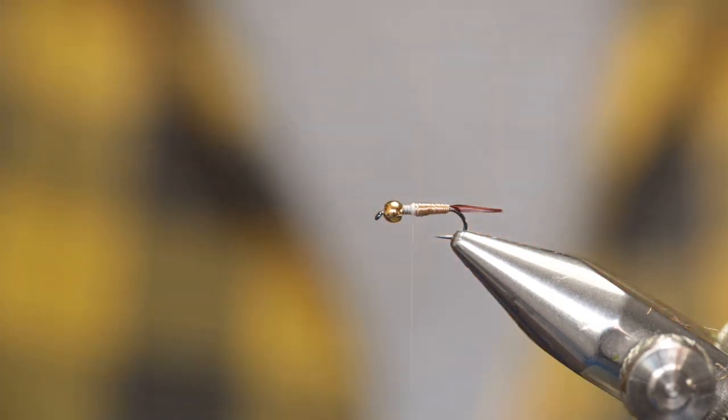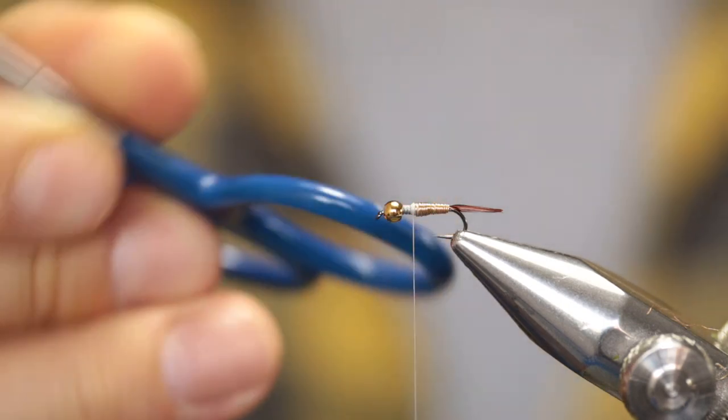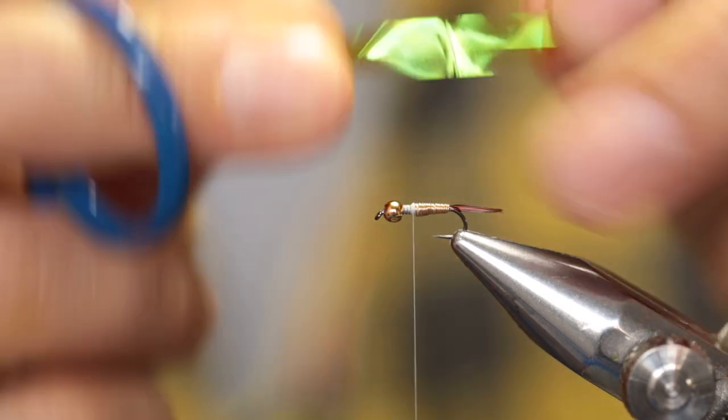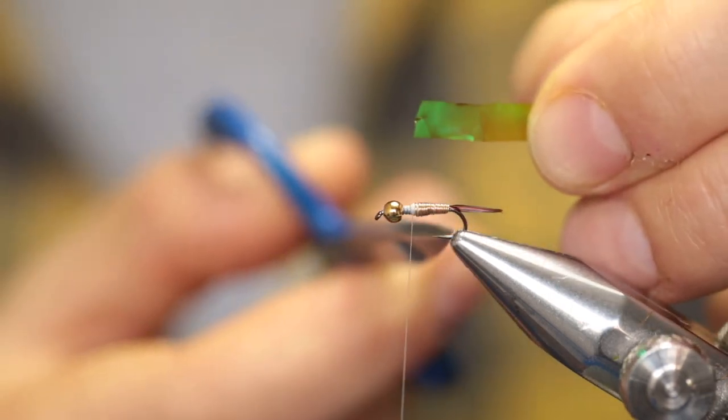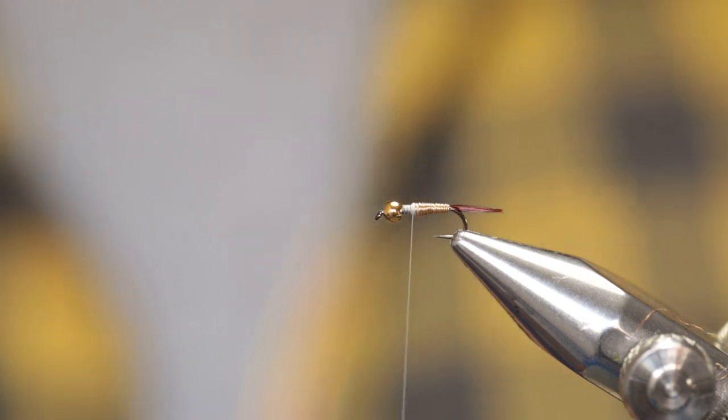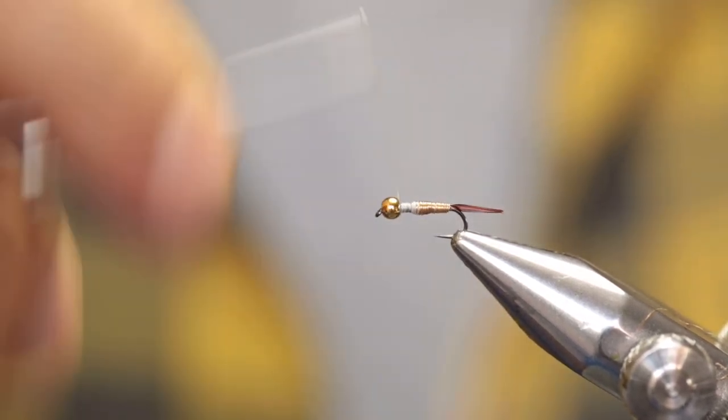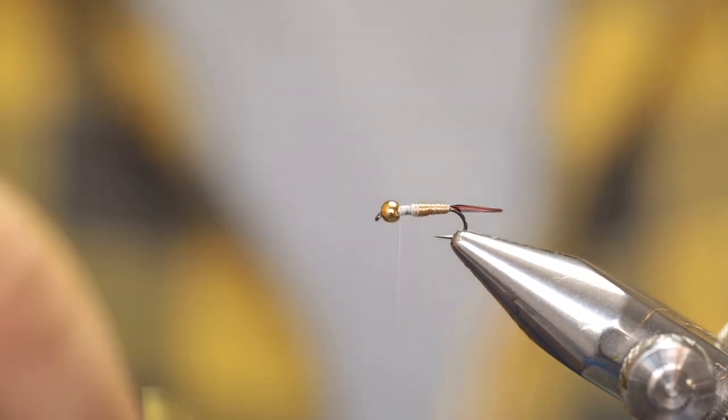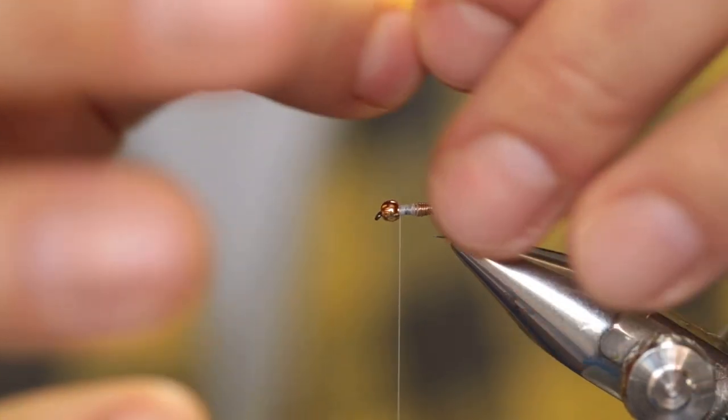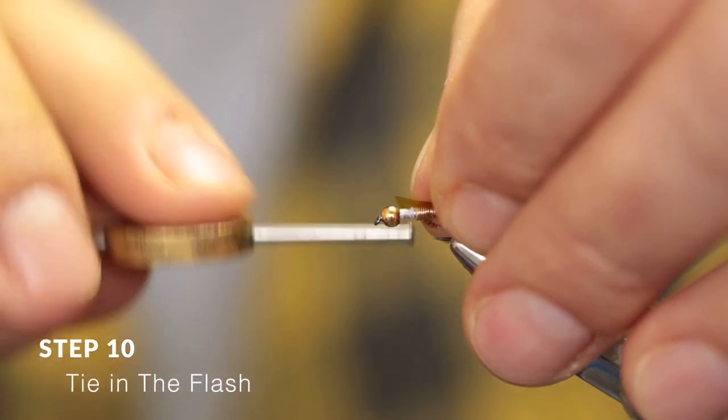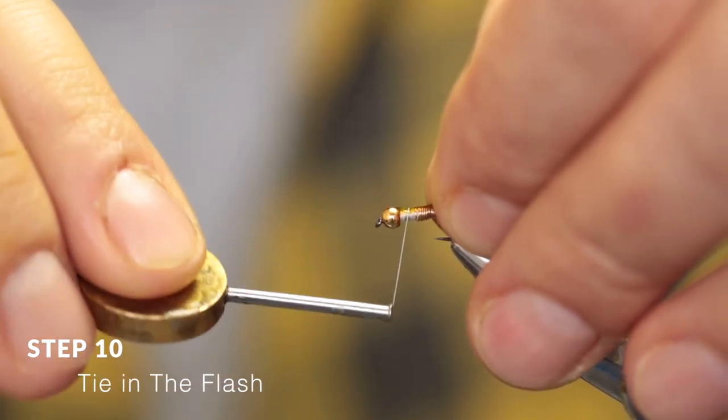Now it's time to tie in the flashback. As the flashback will lay on top of the thorax, you have to tie it in first because you're going to fold it over. You want the flashback material to be about the width of the hook gap or slightly thinner. About three-quarters of an inch is fine. Move your thread forward to the base of the bead, make a couple of wraps, then place the flashback material on top of the hook shank, hold it in place, and secure it.